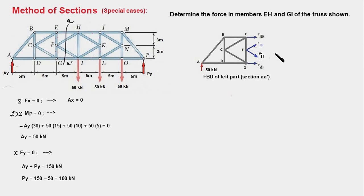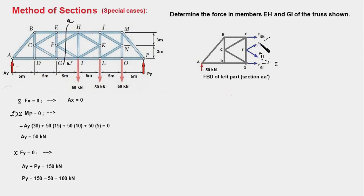However, let us examine this in detail. Forces FEH and FFH meet at point H, and forces FFI and FGI meet at point I. If we write a moment equation about H, two forces are eliminated leaving two unknowns — not solvable. But consider a hypothetical case: if three of the four forces meet at a single point and we write the moment equation about that point, our equation will have only one unknown, and that will be solvable.